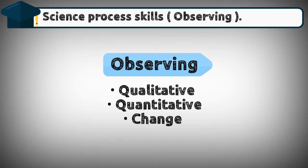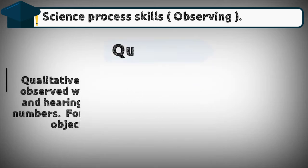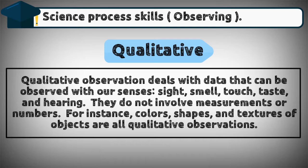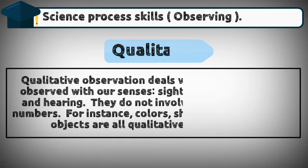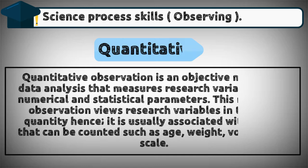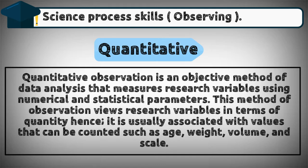The process of observing can be qualitative, quantitative, and change. Qualitative observation deals with data that can be observed with our senses: sight, smell, touch, taste, and hearing. They do not involve measurements or numbers. For instance, colors, shapes, and textures of objects are all qualitative observations.